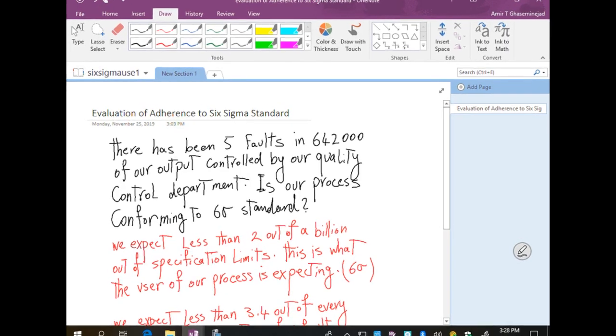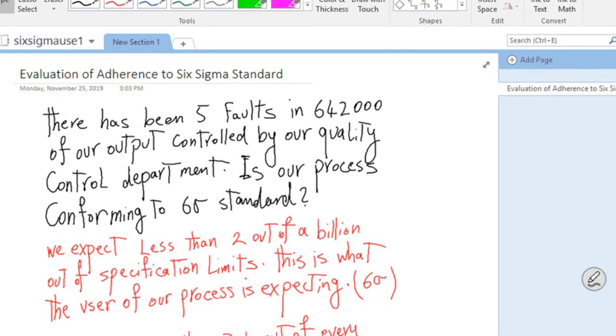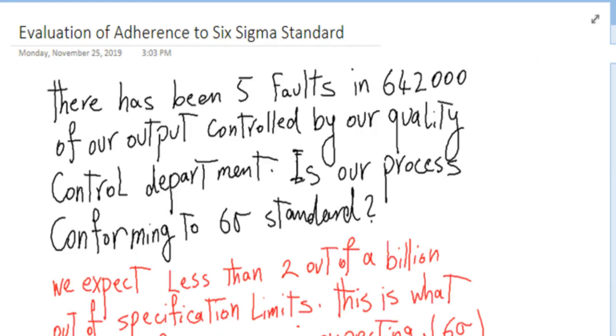Let's assume there have been five faults in 642,000 of our outputs as controlled by our quality control department. The question is: is our process conforming to Six Sigma standard or not? This is our question.